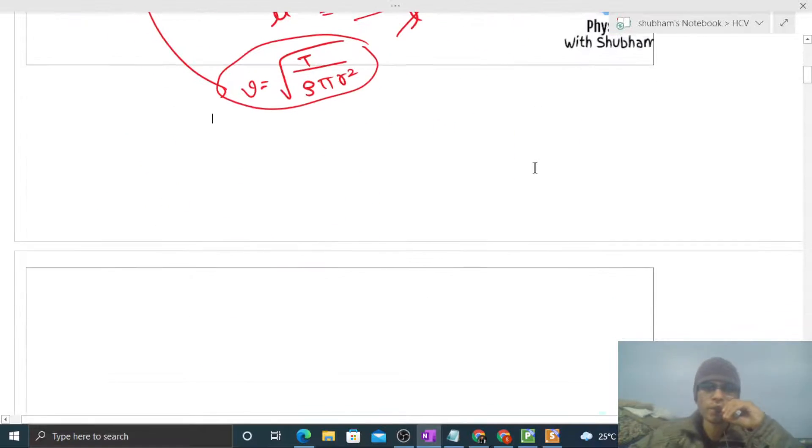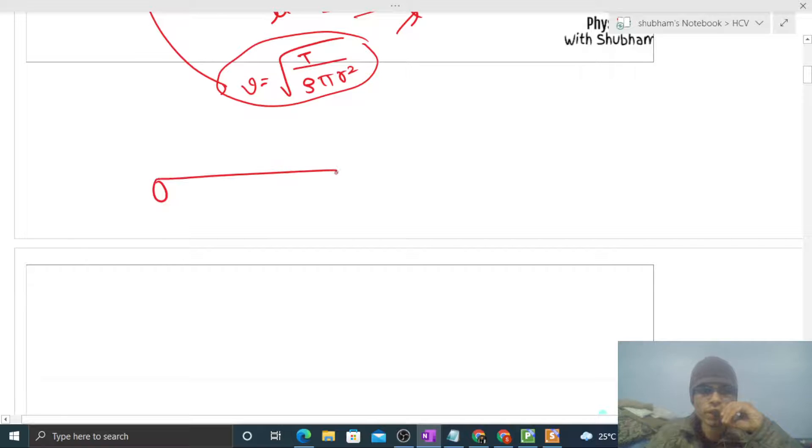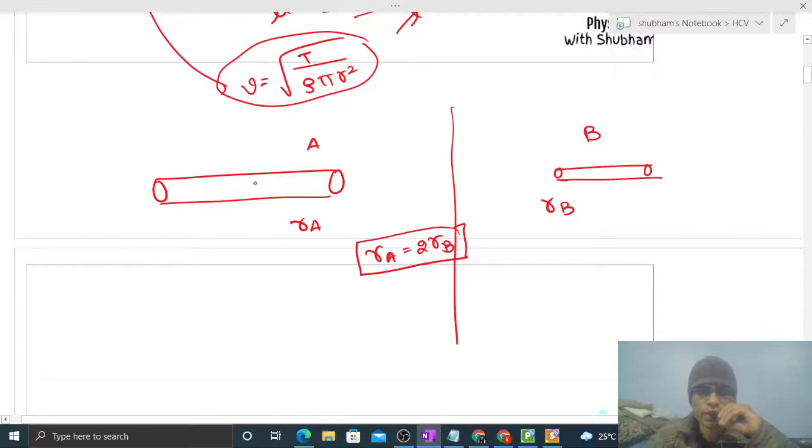Radius of string A is RA and radius of string B is RB. Given that RA equals twice of RB. Tension in both strings is same, let's say T. Both are made of same material, so density of both strings will be same, say ρ.